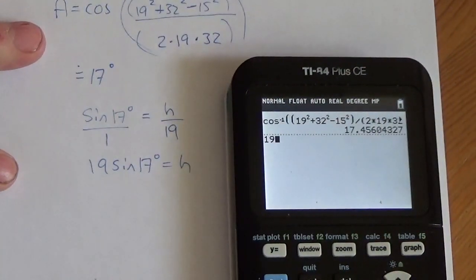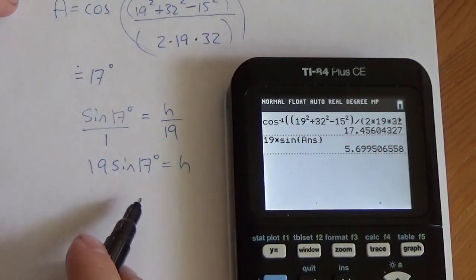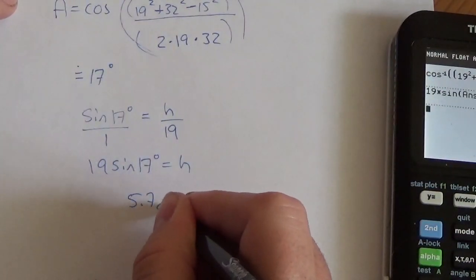So, there we go, so 19 multiplied by the sine, and I said the sine of h, I meant the sine of the answer that we just came up with, 17. So, 19 times the sine of the answer, and here we go. So, the height is, to the nearest tenth here, is 5.7 centimeters.